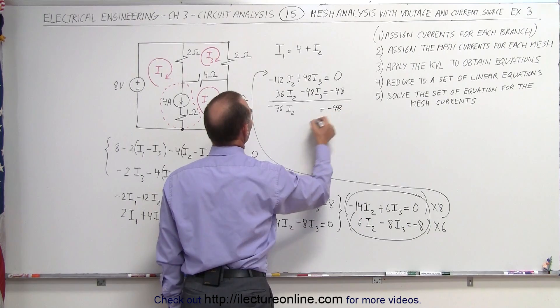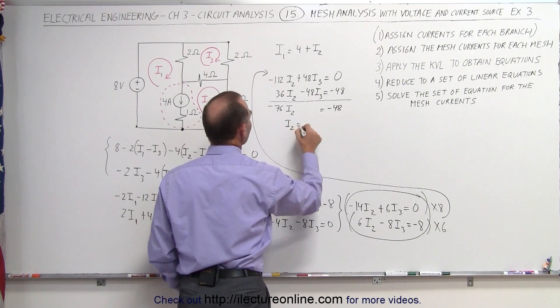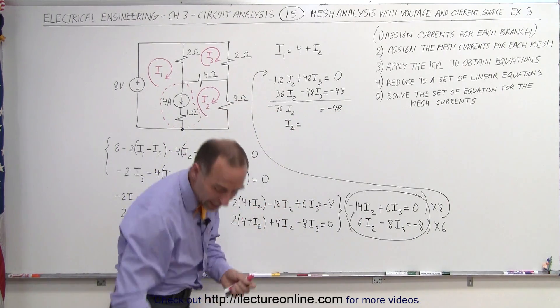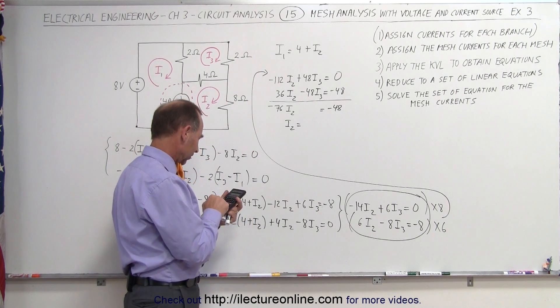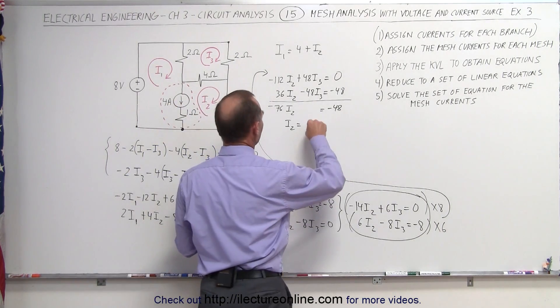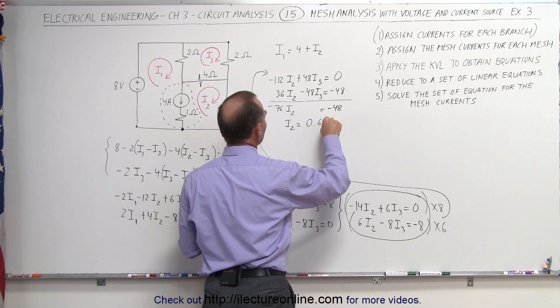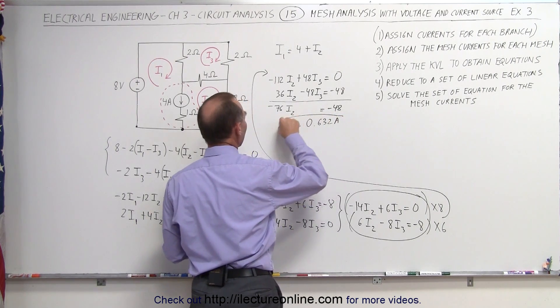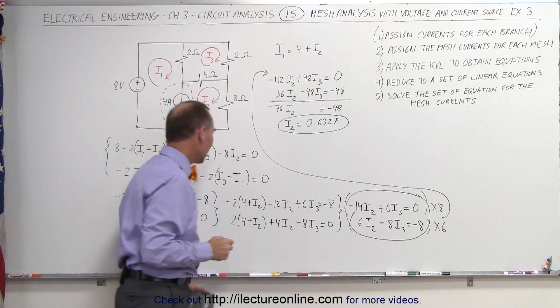Which means that I2 can be found by dividing 48 by 76. 48 divided by 76 equals 0.632 amps. Now we have our first of the three mesh currents.